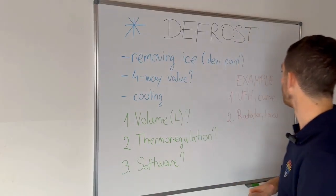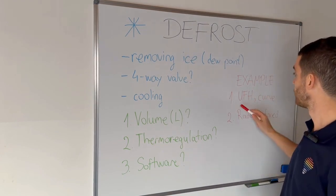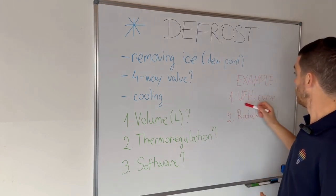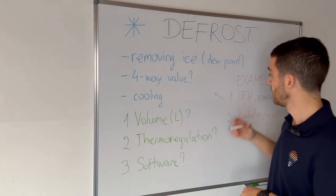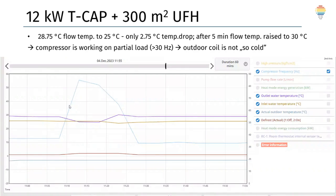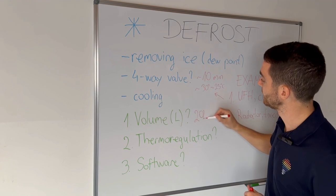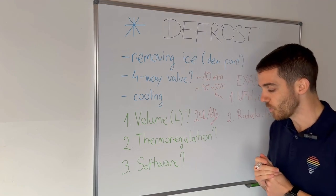Let me show you two examples. First: underfloor heating, a 12 kilowatt unit with around 250 liters of water — all underfloor heating. In that case, with really high humidity, the defrost cycle lasts around 10 minutes. The temperature drop is from 30 degrees down to 25 degrees, and then after 10 minutes it returns to 30. This customer doesn't even know the defrost cycle is happening. This is because we have a huge volume of water. The recommendation is minimum 10 liters per kilowatt, but I would say at least 20 liters per kilowatt — if you ensure that, you will always be on the safe side.